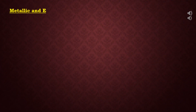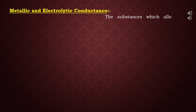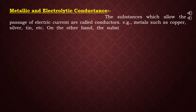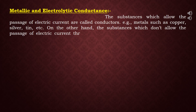Our next term is metallic and electrolytic conductance. Substances which allow the passage of electric current are called conductors — for example, metals such as copper, silver, tin, gold, etc. On the other hand, substances which do not allow the passage of electric current are called insulators — for example, rubber, glass, wood, etc.